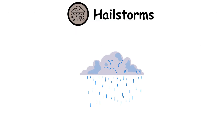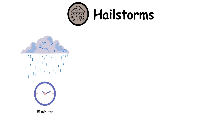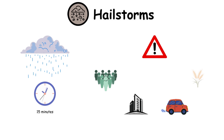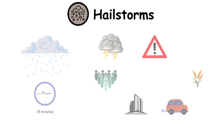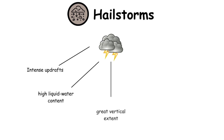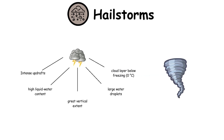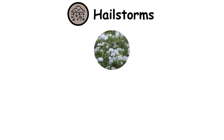Hail Storms. Hail is a type of solid rain made up of balls or lumps of ice. Storms that produce hail which reaches the ground are known as hail storms. They typically last for no more than 15 minutes, but can cause injuries to people and damage buildings, vehicles, and crops. Hail forms in strong thunderstorm clouds, particularly those with intense updrafts, high liquid water content, great vertical extent, large water droplets, and where a good portion of the cloud layer is below freezing. These types of strong updrafts can also indicate the presence of a tornado. The growth rate of hailstones is impacted by factors such as higher elevation, lower freezing zones, and wind shear.